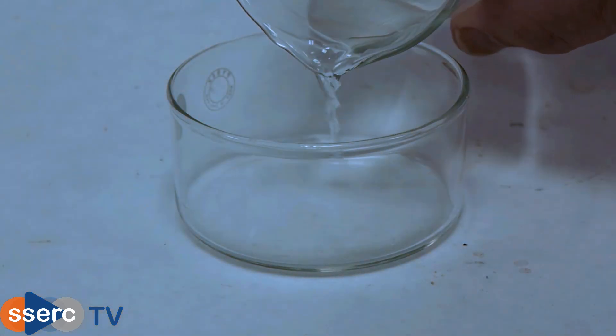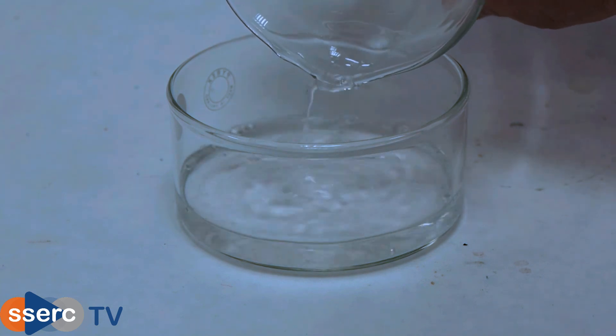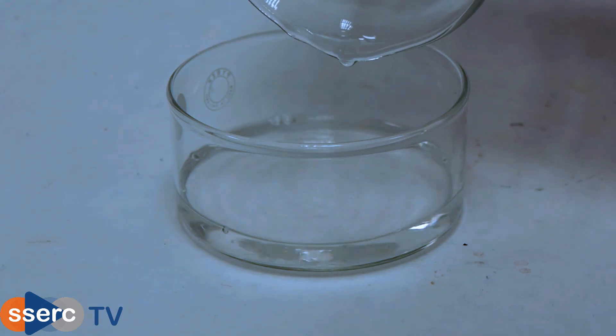Decant the now dry ethyl ethanoate solution into an evaporating basin or crystallising dish and place somewhere warm for the solvent to evaporate.